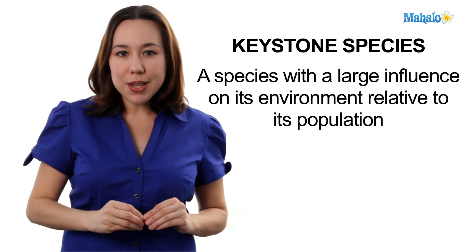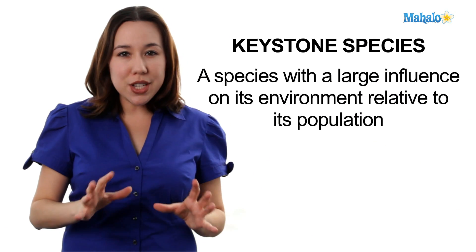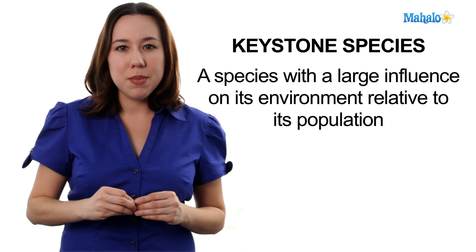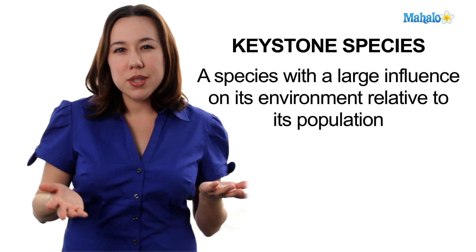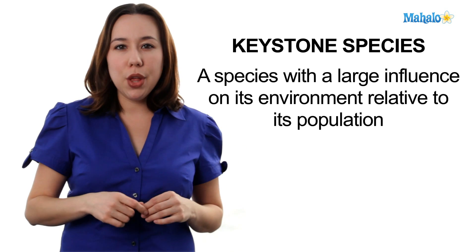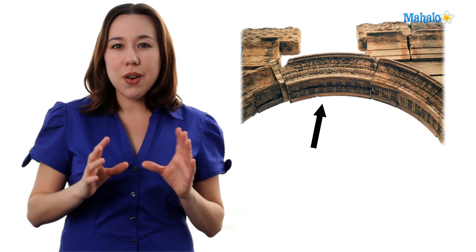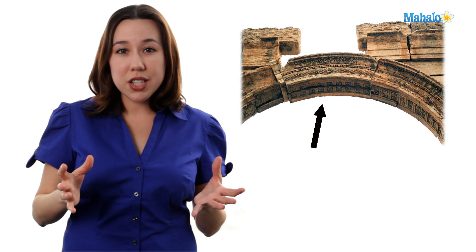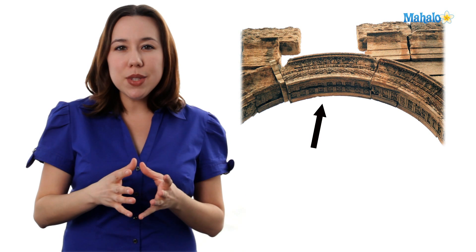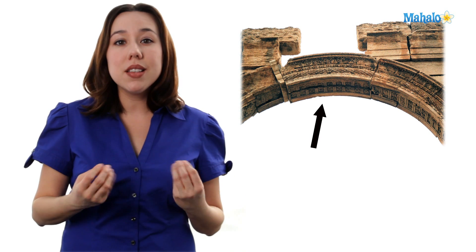A keystone species is a species that has a huge impact on the environment even though its population numbers may be kind of low. Much like a keystone in an arch helps support the entire arch, a keystone species if removed from the ecosystem can cause a collapse.